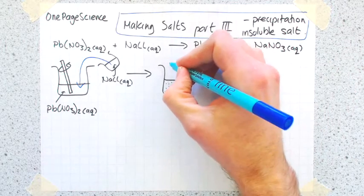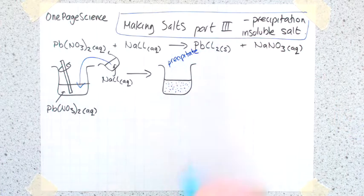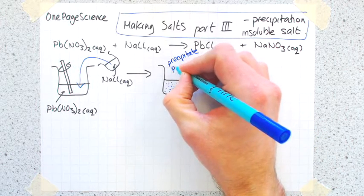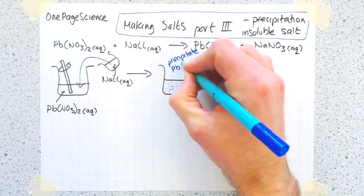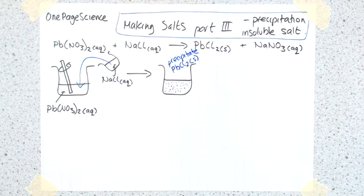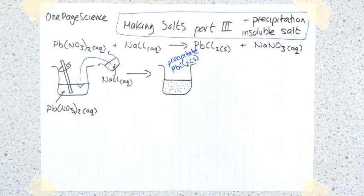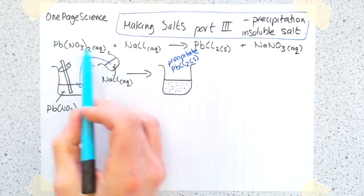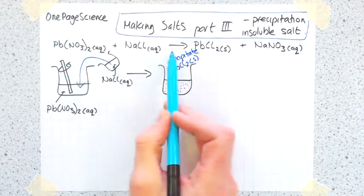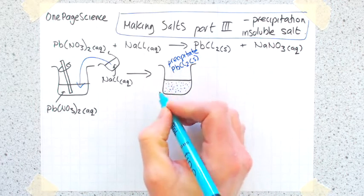And in that solution we will have lots of bits of solid, which I'm drawing as blue dots. What that's called is a precipitate, and in this example the precipitate is the PbCl2(s) which is a solid. But also in there we have all the things that are soluble in water.